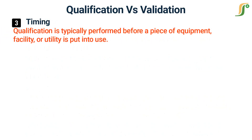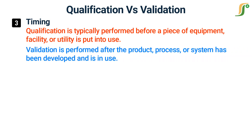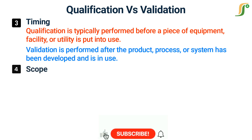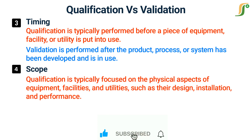Qualification is typically performed before a piece of equipment, facility, or utility is put into use. Validation is performed after the product, process, or system has been developed and is in use. Qualification is typically focused on the physical aspects of equipment, facilities, and utilities, such as their design, installation, qualification, and performance.